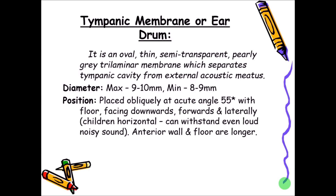In children, the tympanic membrane is much more horizontal compared to adults, and the advantage is they can withstand even loud noisy sound. Because of this angulation of 55 degrees, the anterior wall and the floor in adults are much longer compared to the posterior wall and the roof.